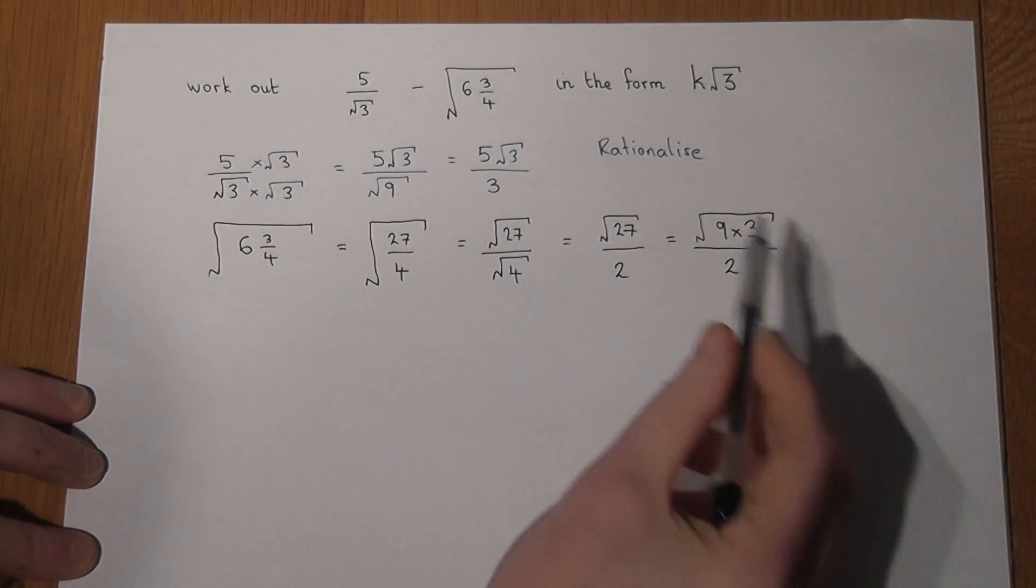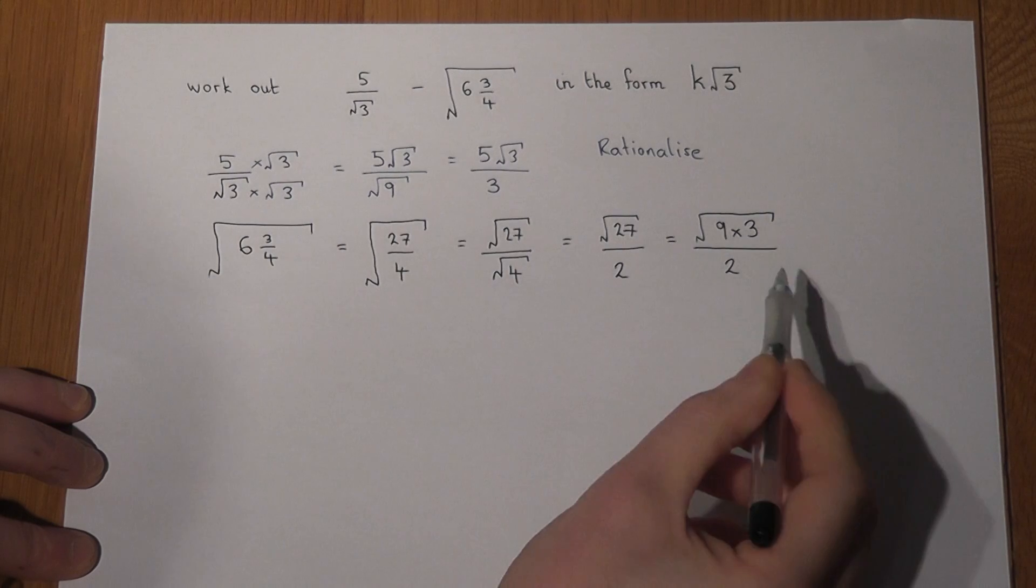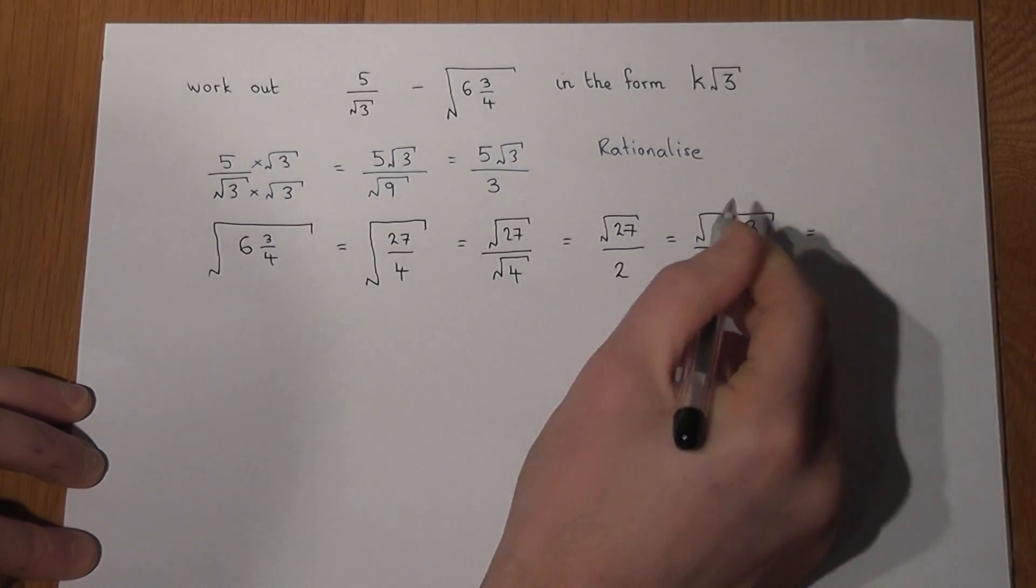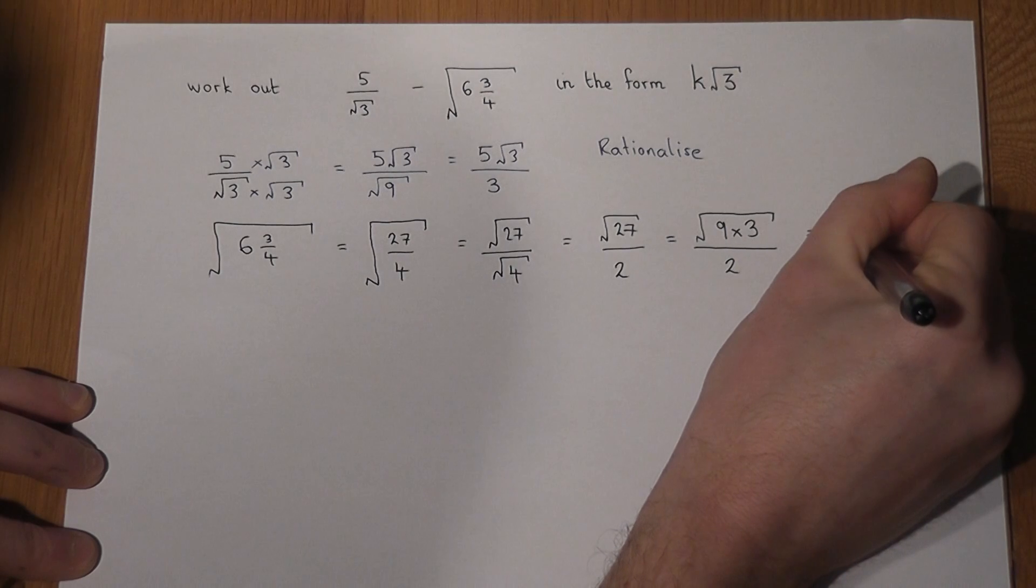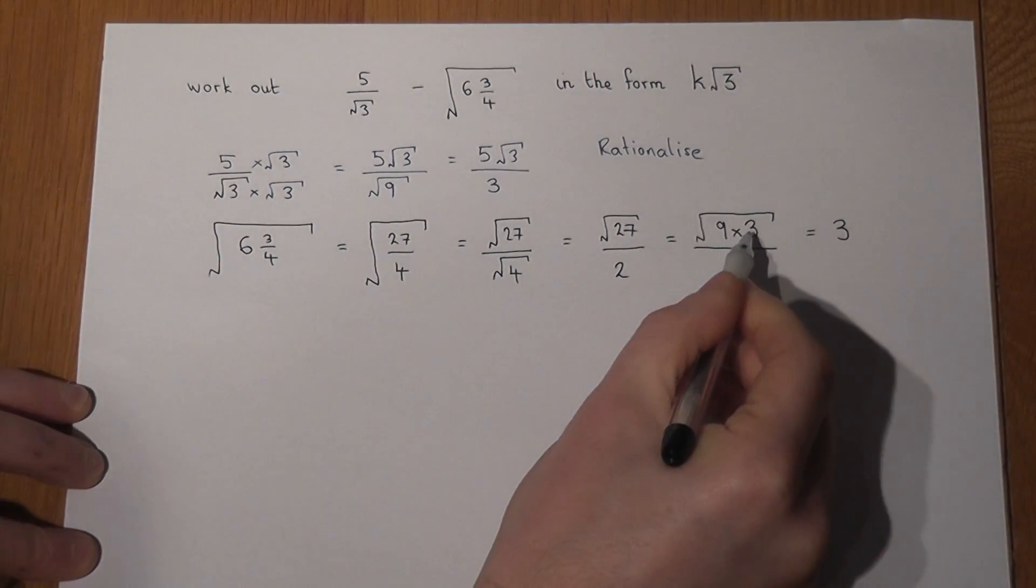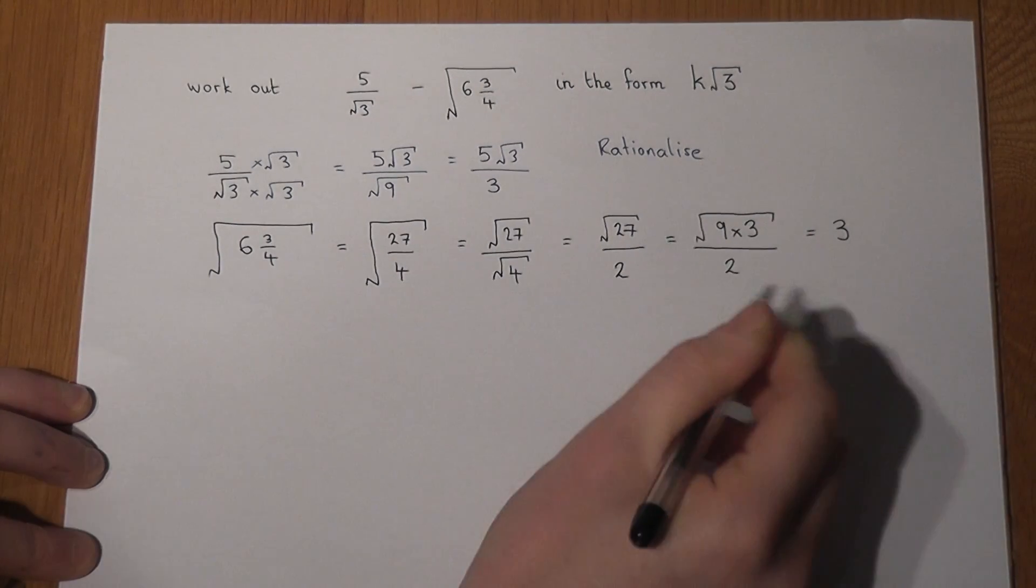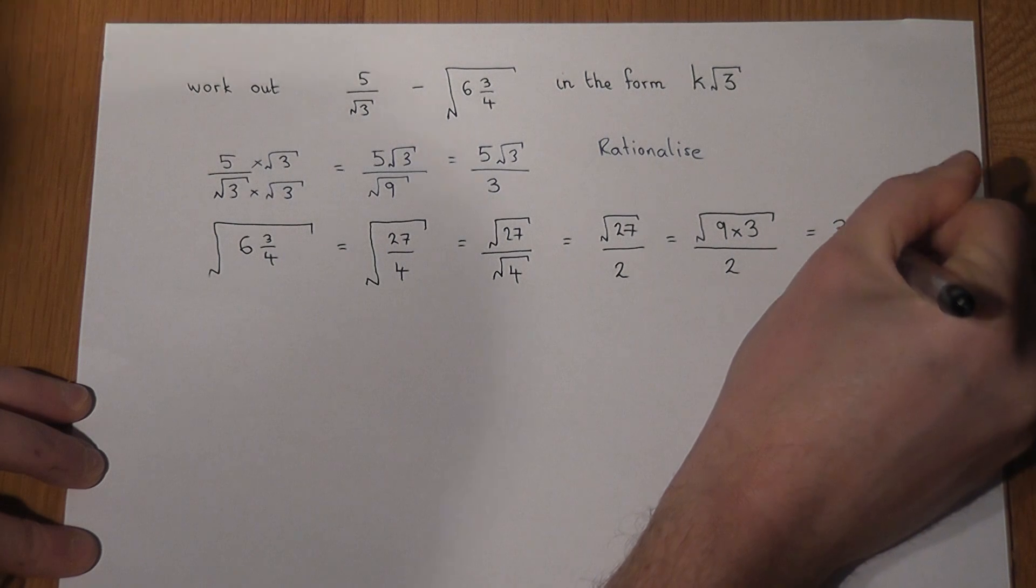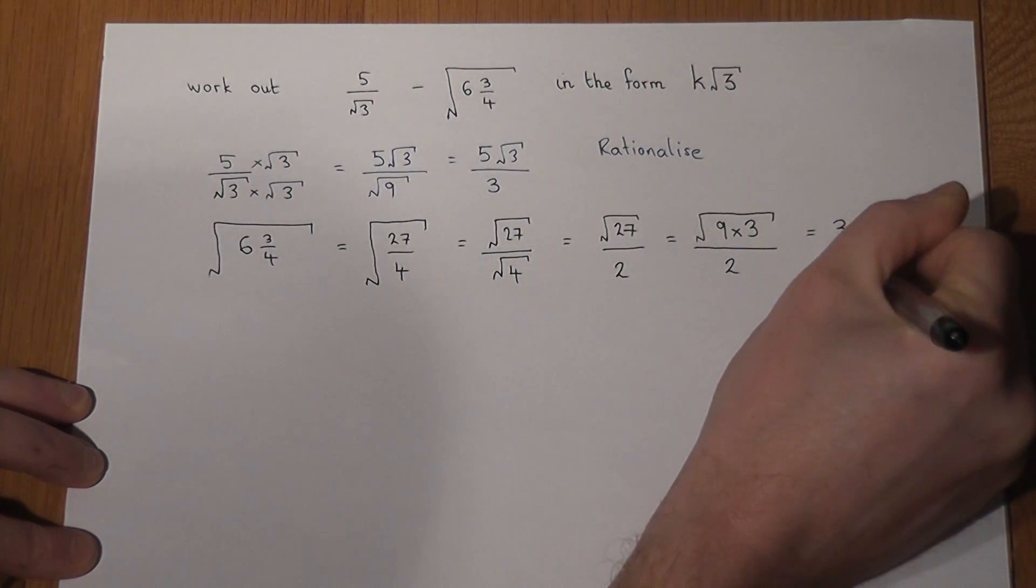And then try to square root both the bits underneath. Now I can square root 9, it just becomes 3. But when I try to square root 3 I can't do it really without a calculator, so I can just write down square root of 3. And that's just over 2.